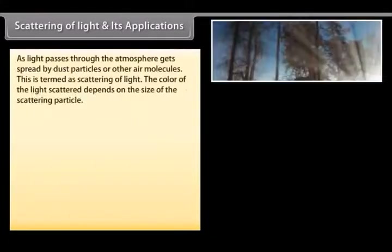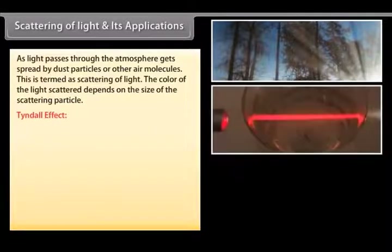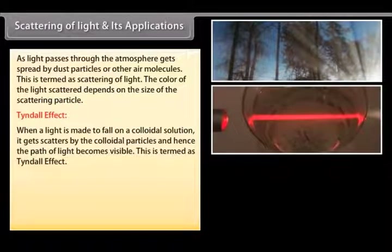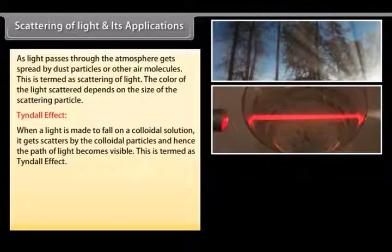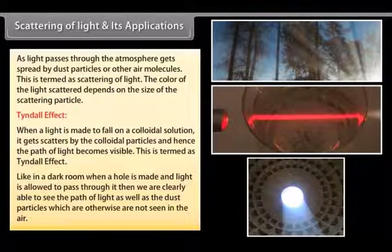Scattering of light and its applications: As light passes through the atmosphere, it gets spread by dust particles. The color of light scattered depends on the size of the scattering particle. Tyndall effect: when light is made to fall on a colloidal solution, it gets scattered by the colloidal particles and the path of light becomes visible. For example, in a dark room when a hole is made and light is allowed to pass through it, we can clearly see the path of light as well as the dust particles which are otherwise not visible in the air.